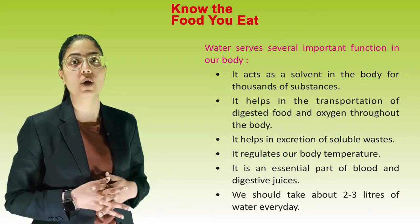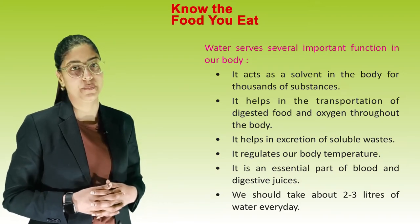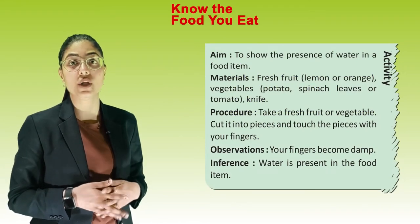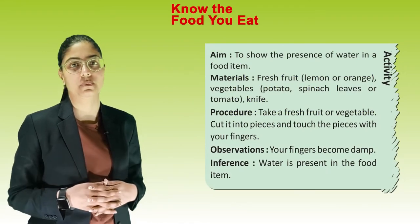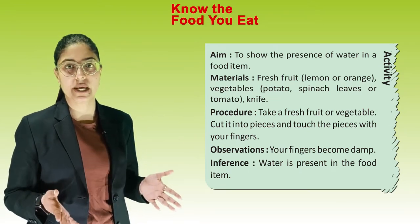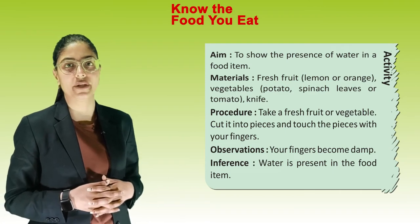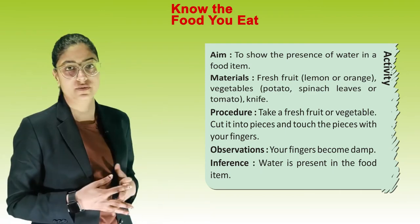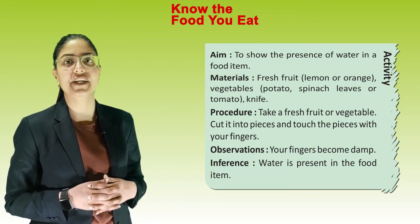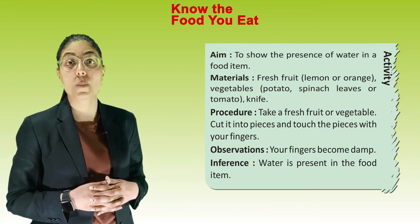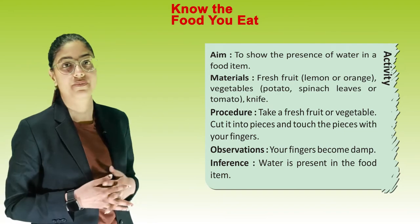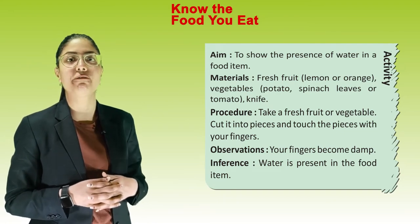We should take about 2–3 litres of water every day. Activity — Aim: To show the presence of water in food items. Materials: Fresh fruit (lemon or orange), vegetables (potato, spinach, leaf or tomato) and a knife. Procedure: Take a fresh fruit or vegetable, cut it into pieces and touch the pieces with your fingers. Observation: Your fingers become wet. Inference: Water is present in the food item.